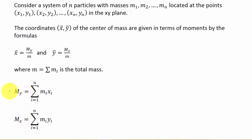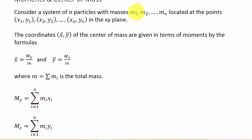To find Mᵧ, it's mᵢ times xᵢ summed from i=1 to n. In other words, Mᵧ = m₁x₁ + m₂x₂ + ... + mₙxₙ. The same thing with Mₓ: it's m₁y₁ + m₂y₂ + ... + mₙyₙ.